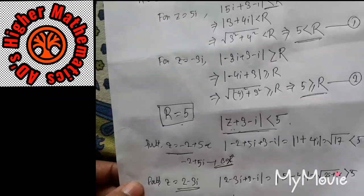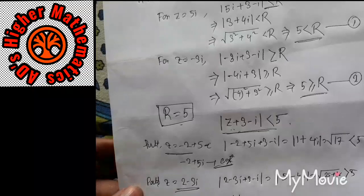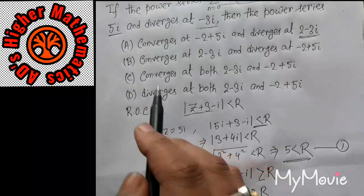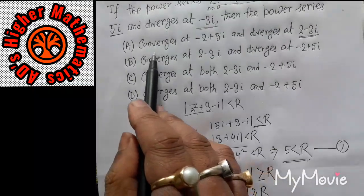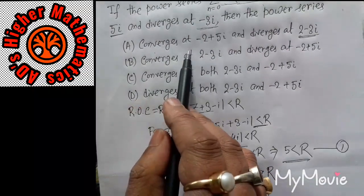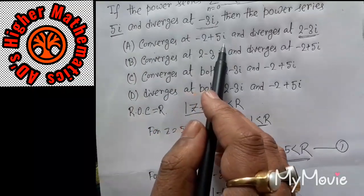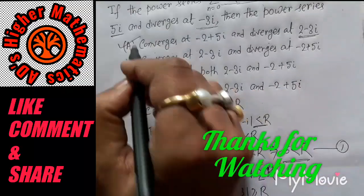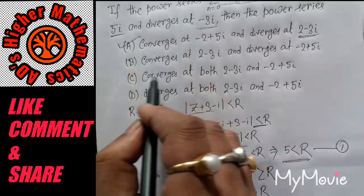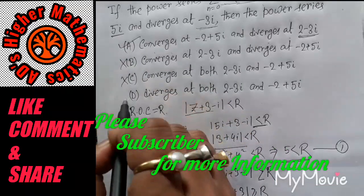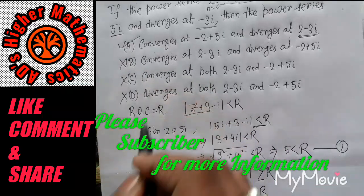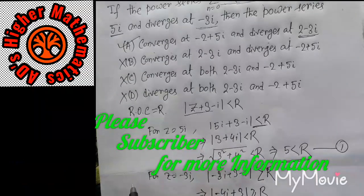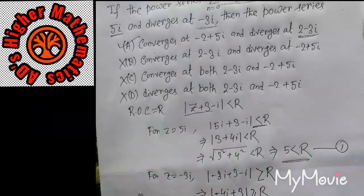Option A says the series converges at minus 2 plus 5i and diverges at 2 minus 3i. This is the correct option, and hence the remaining options will be incorrect. Thank you friends, thank you for watching.